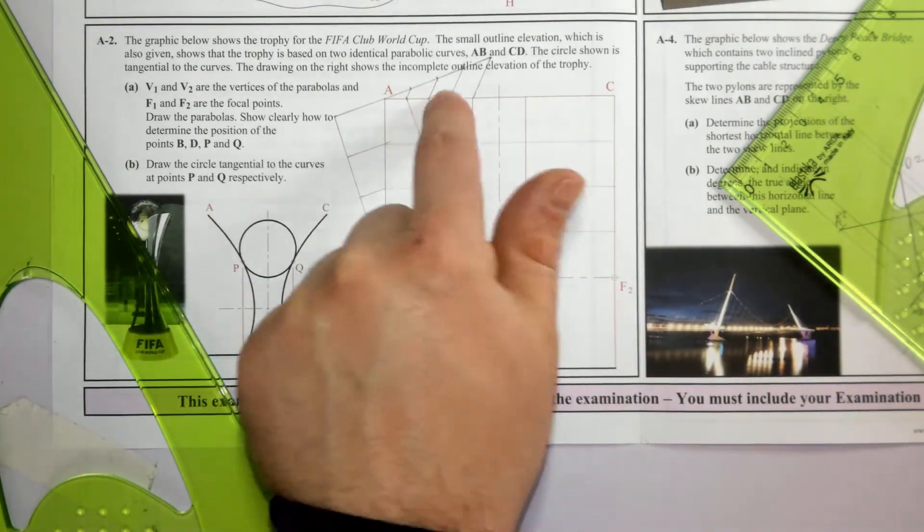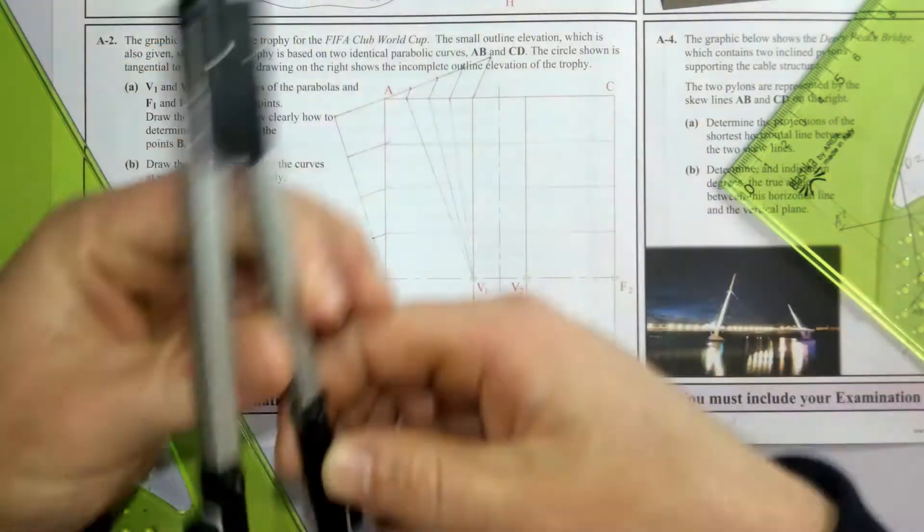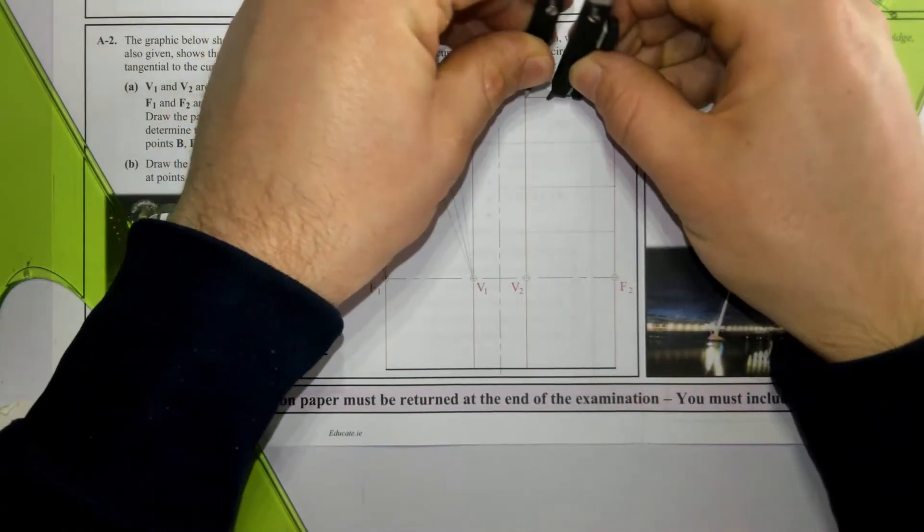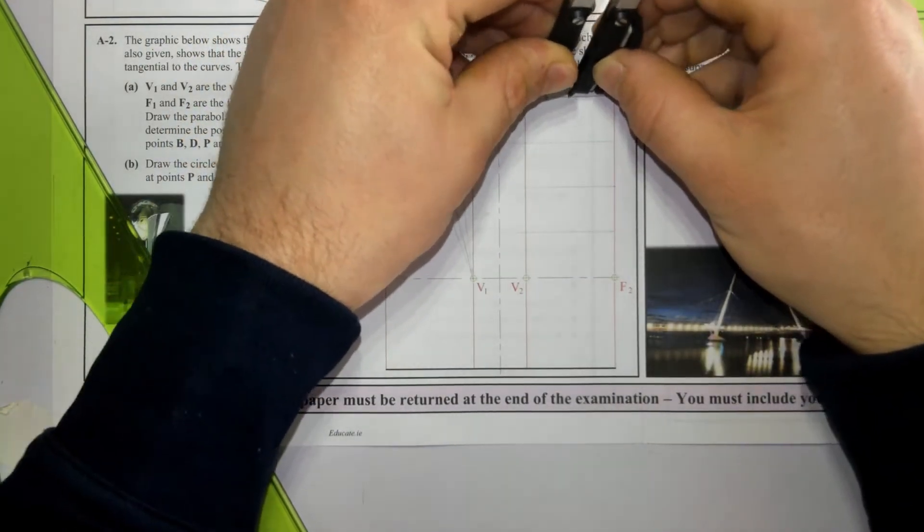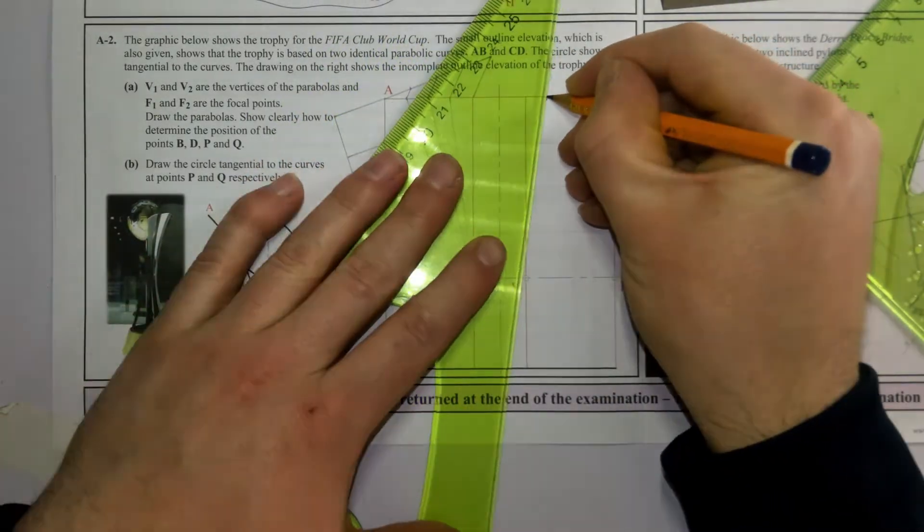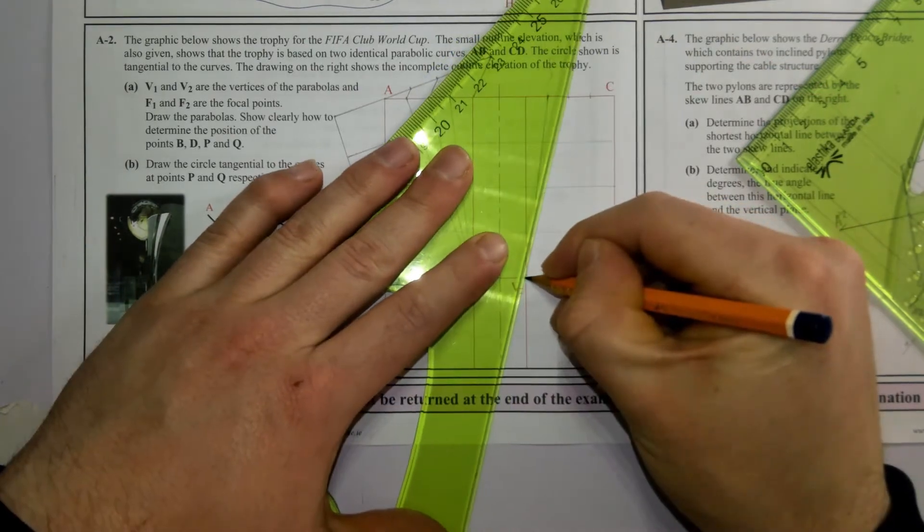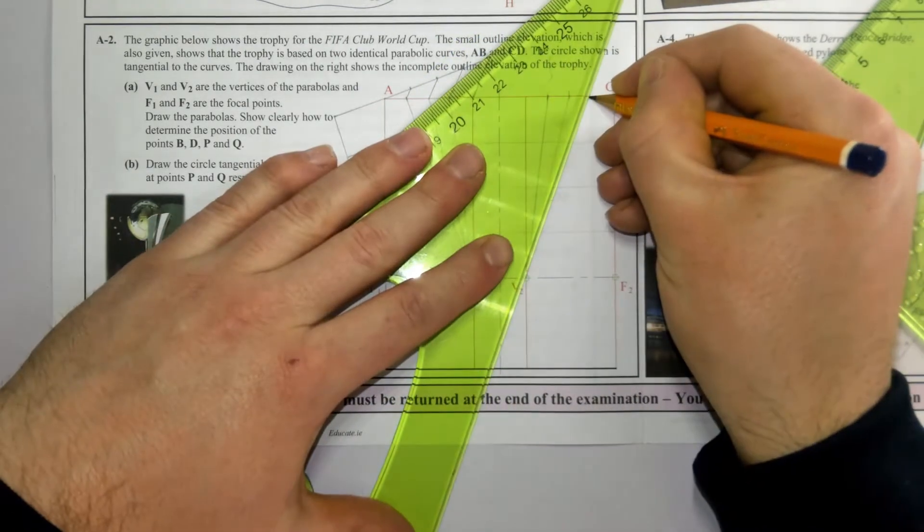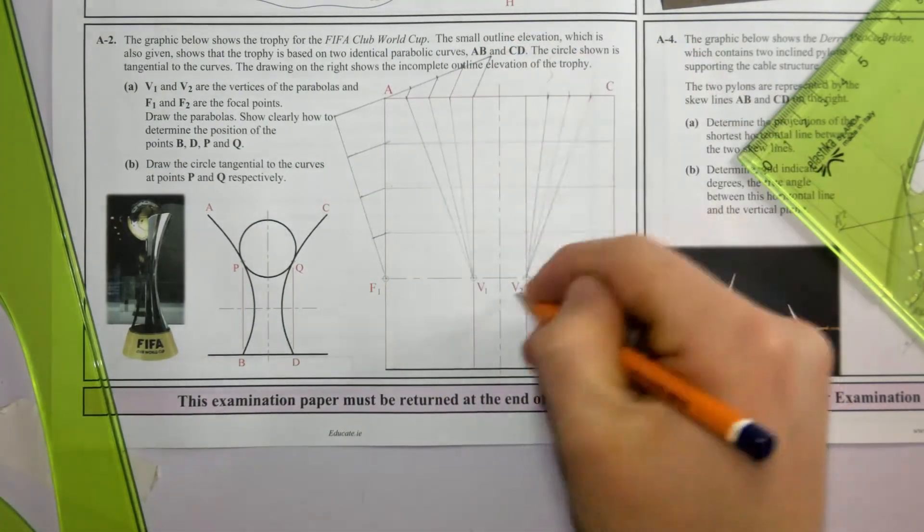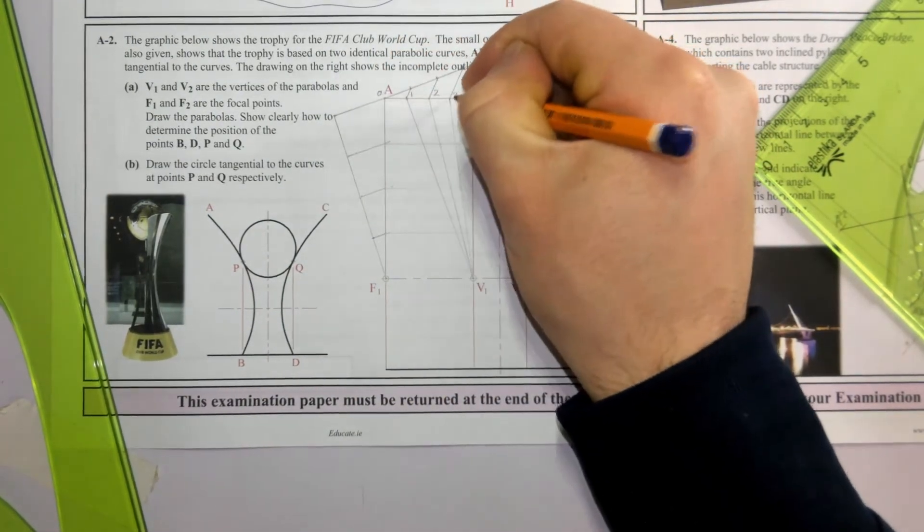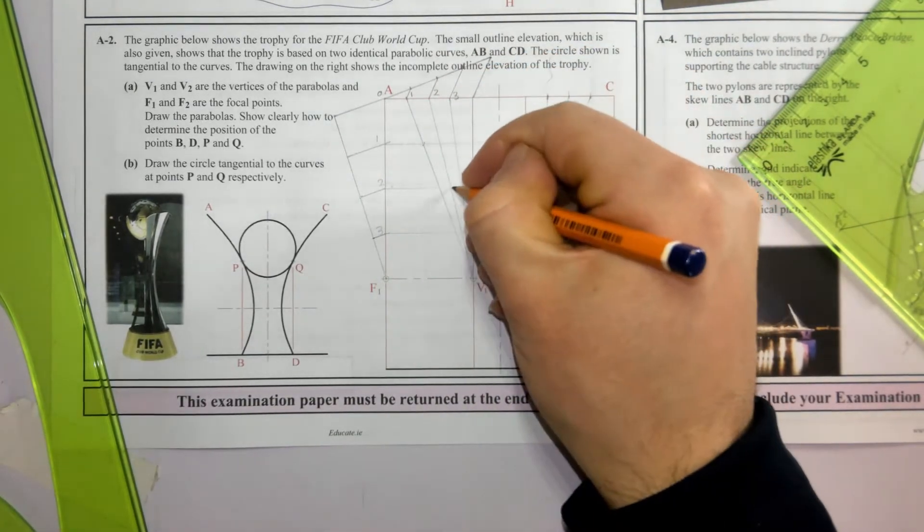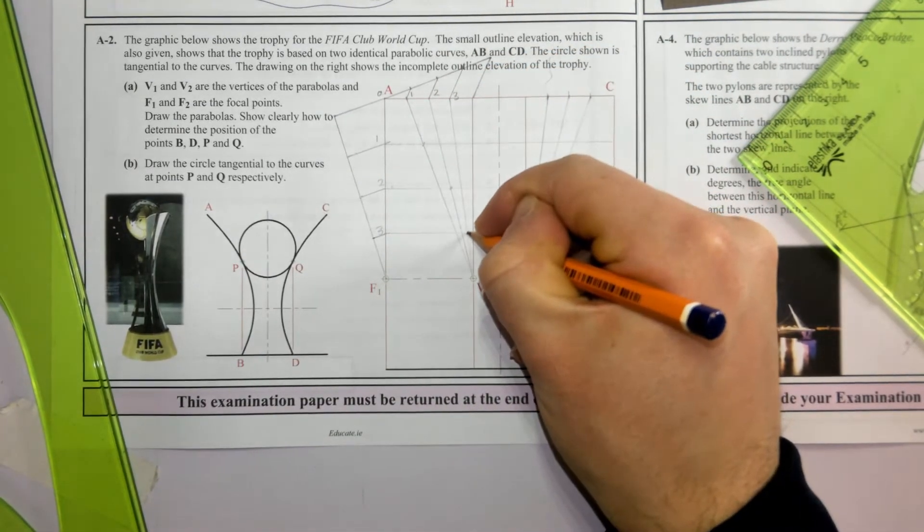Now I'm going to plot those points here. With my compass I'm going to transfer these distances here as both of them are identical and join to V2. I'm going to label these points 0, 1, 2, 3, 1, 2, 3.